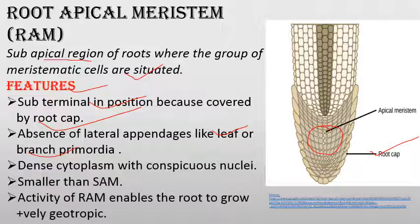The cells of the root apical meristem are large-sized, thin-walled, with dense granular cytoplasm and conspicuous, prominent nuclei. These features are similar to shoot apical meristem cells. The size of the root apical meristem is somewhat smaller compared to the shoot apical meristem.